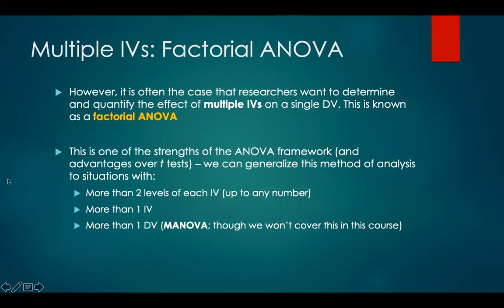However, it is often the case that researchers want to determine and quantify the effect of multiple independent variables on a single dependent variable. This is known as factorial ANOVA. This is one of the strengths of the ANOVA framework and its advantages over t-tests — we can generalize this method of analysis to situations with more than two levels of each independent variable, more than one independent variable, and even more than one dependent variable, which is called a MANOVA, or multivariate analysis of variance. We won't cover MANOVA in this course.